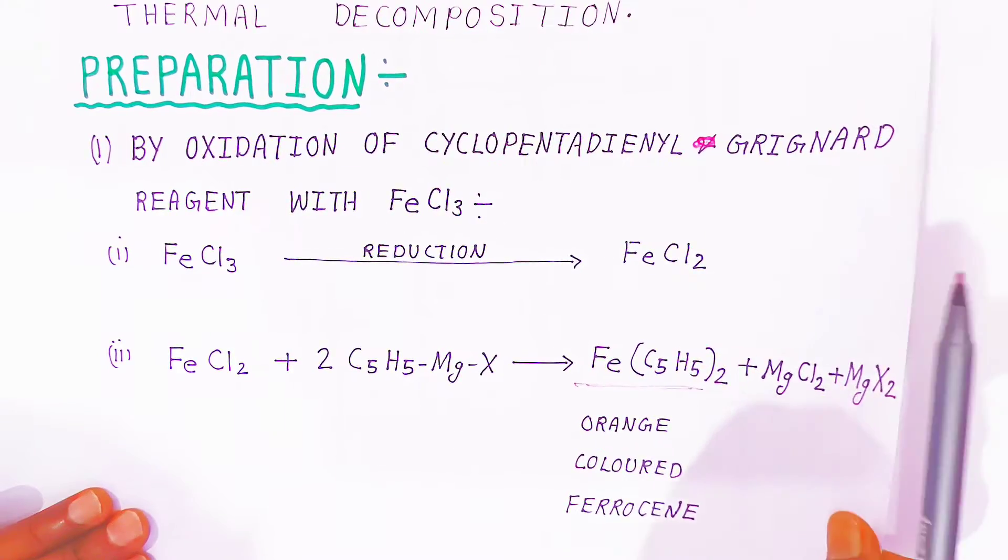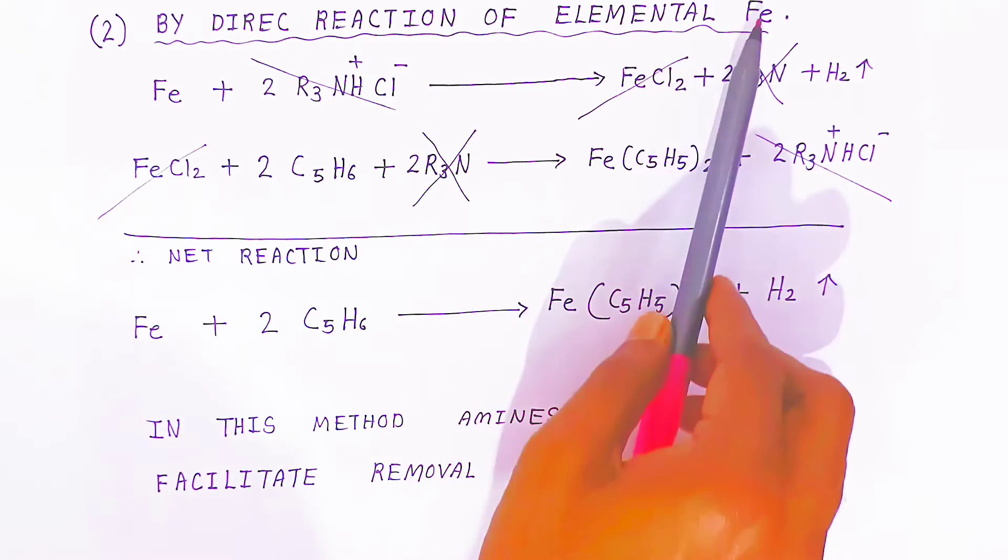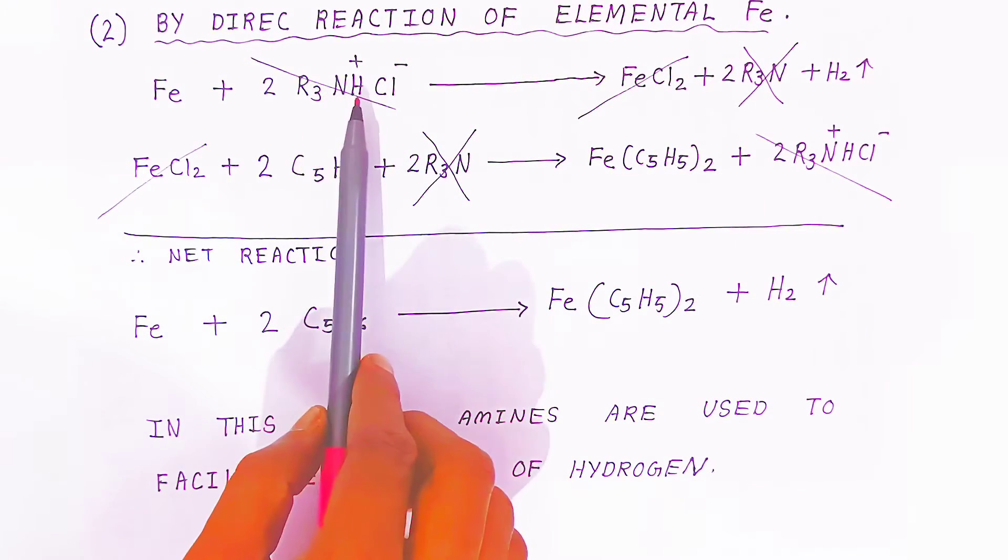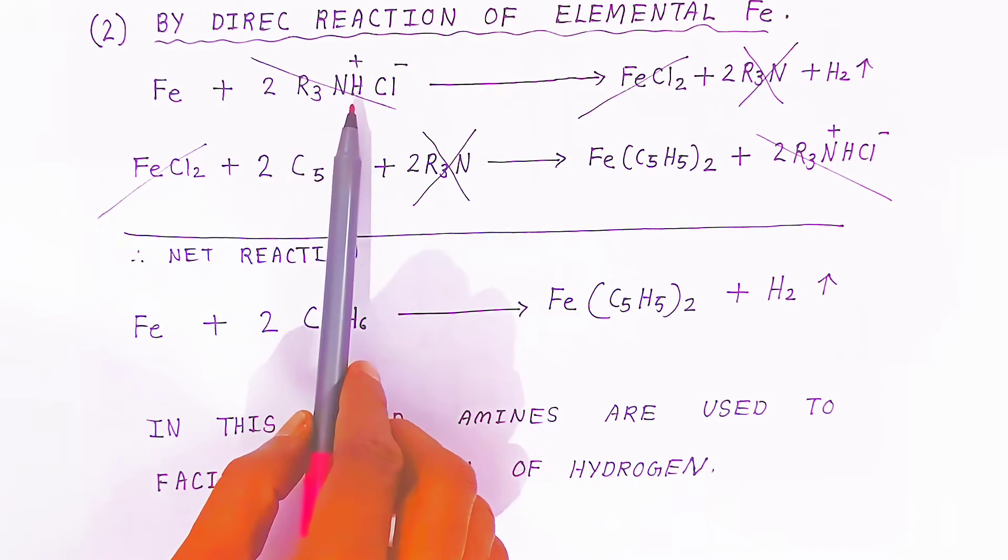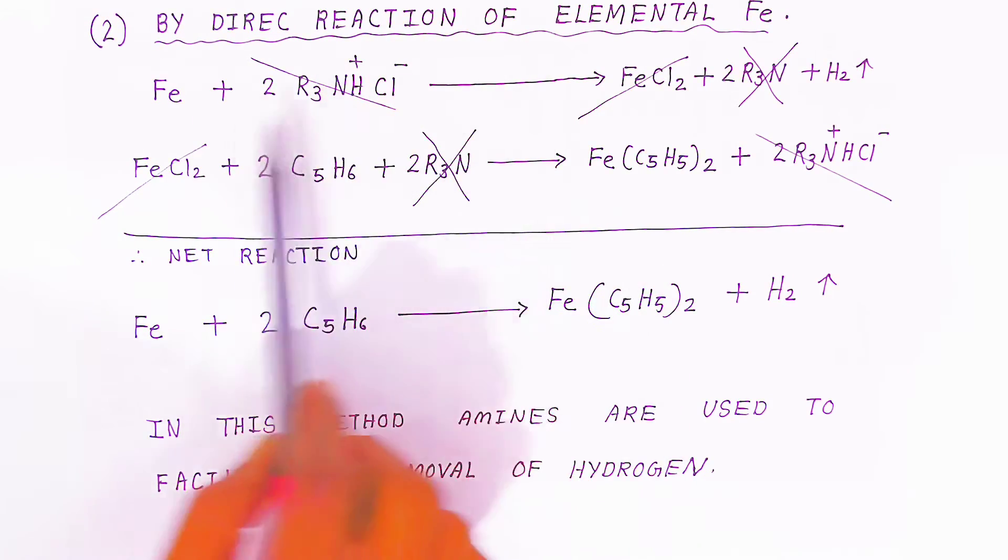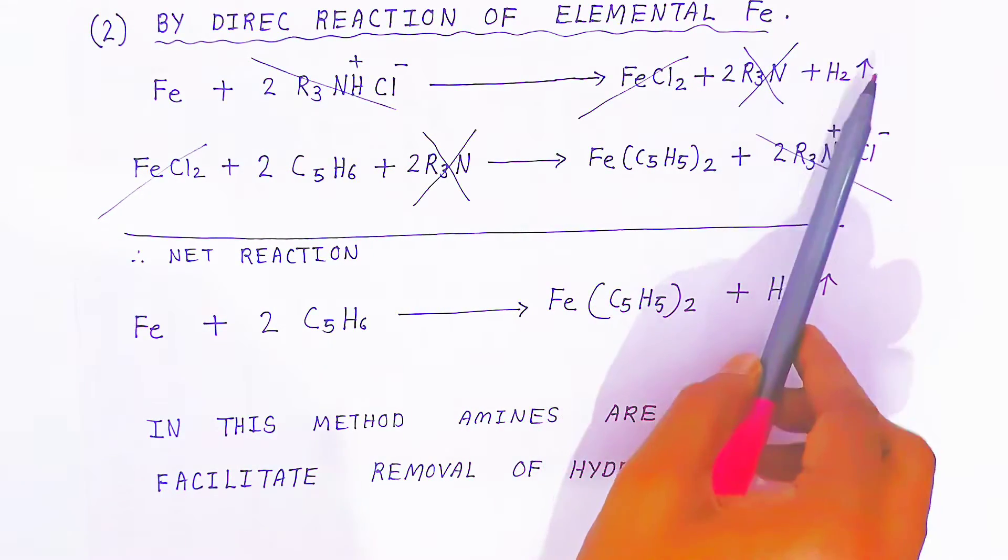Second is by direct reaction of elemental Fe. When Fe directly reacts with tertiary amines R3NH tertiary amine salt, it will form FeCl2, R3NH, and hydrogen gas will liberate.